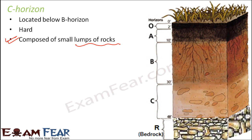The C horizon is located just above the R horizon, which is the layer of bedrocks. Between the C horizon and the bed of rocks, there is direct contact of soil with the rocks. These rocky layers are very hard and very difficult to dig. Just as when you dig in your garden — initially it is very easy because the topmost layers are very soft, but as you go deeper you need to put more effort because it is becoming harder and harder.